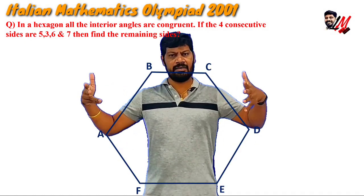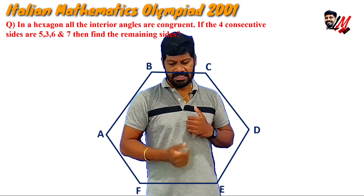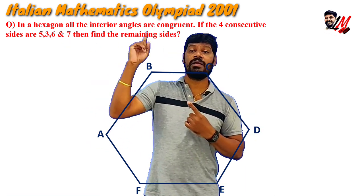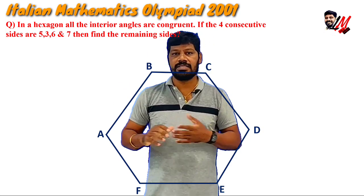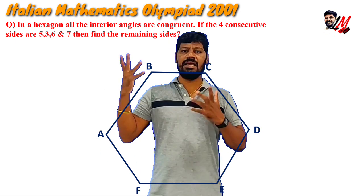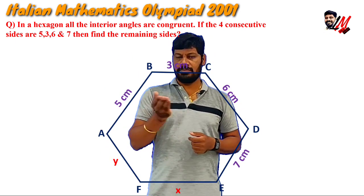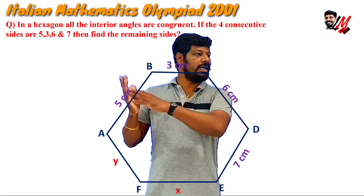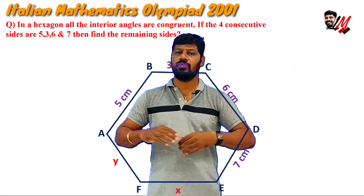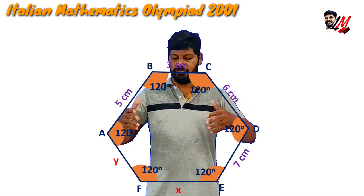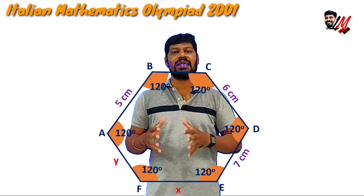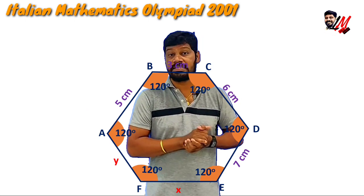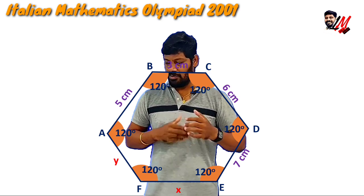Now let me take a diagram. I label the vertices A, B, C, D, E, F. This is a hexagon — be clear, it is not a regular hexagon, because even though the angles are equal, they have given 4 different side lengths. So AB = 5, BC = 3, CD = 6, DE = 7. Let me take EF as X and FA as Y. All 6 angles are equal to 120 degrees, and we need to find X and Y.